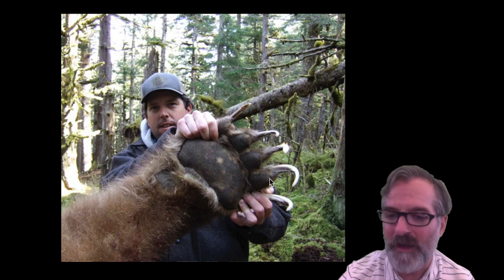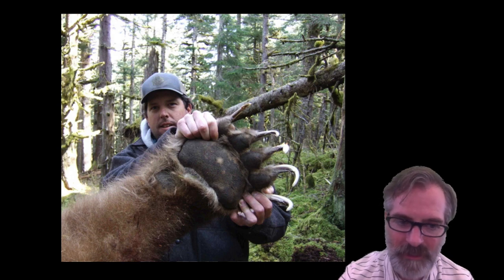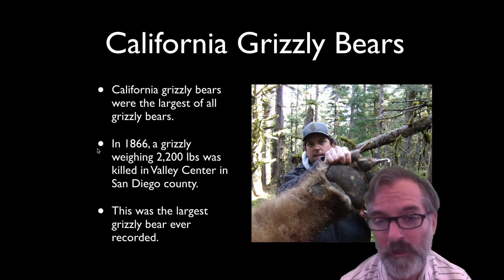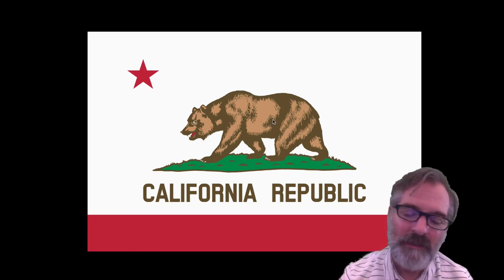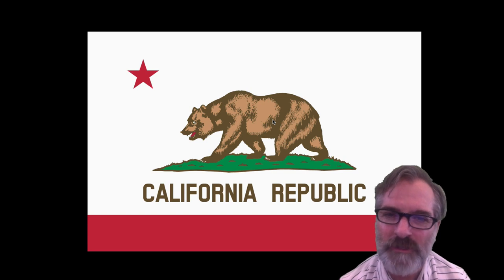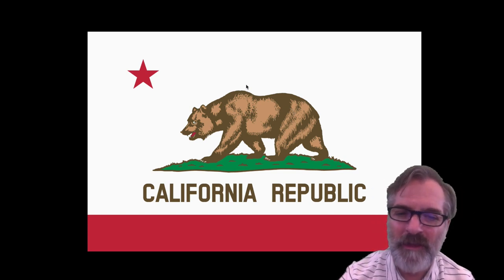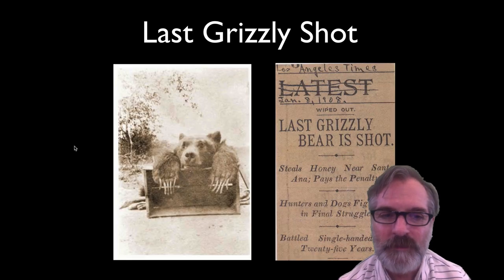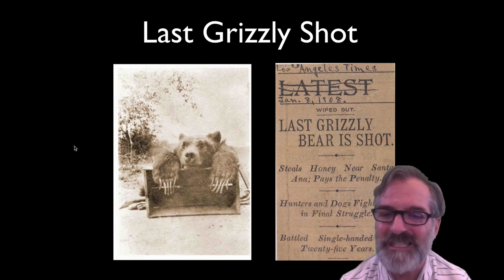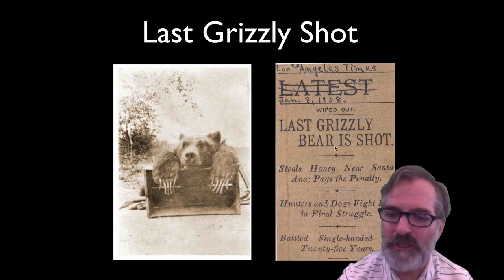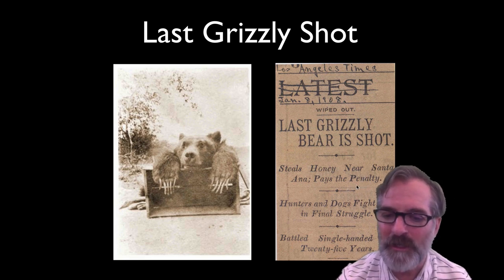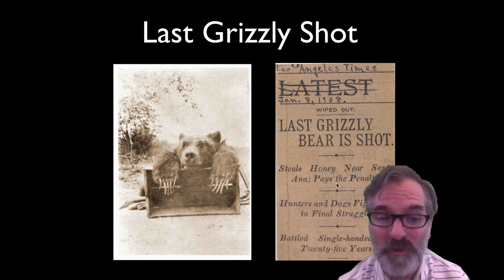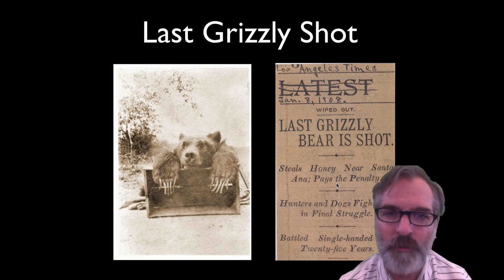A lot of people don't realize the California grizzly is on our state flag—many think it's a black or brown bear. The bear on the flag is supposedly modeled after the last grizzly in captivity, which died in 1911 at Golden Gate Park Zoo. That bear's name was Monarch. The last grizzly bear ever shot in the wild was in 1908—it was near Santa Ana, basically where Disneyland is, stealing honey. Pretty crazy to think there were grizzly bears roaming around where Disneyland is today.